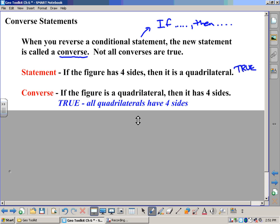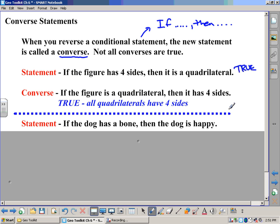Let me give you another statement here. What if we said: if the dog has a bone, then the dog is happy? Well, that would be true. If you gave a dog a bone, they would be happy.